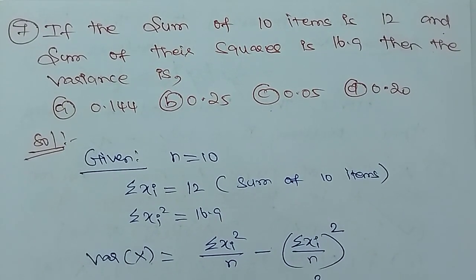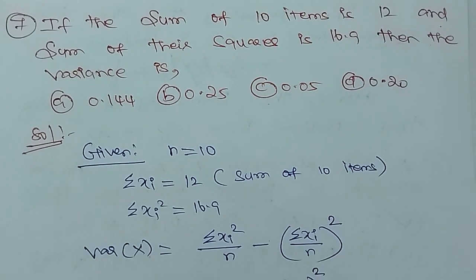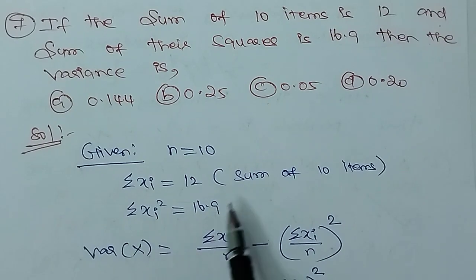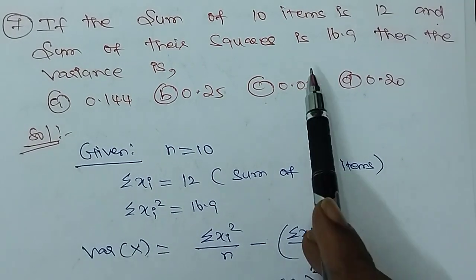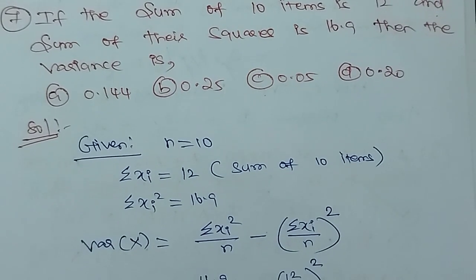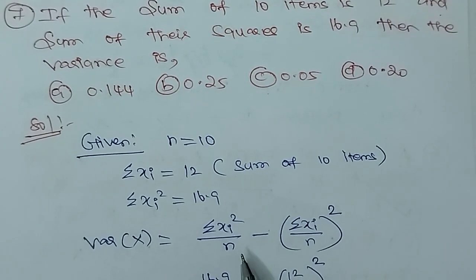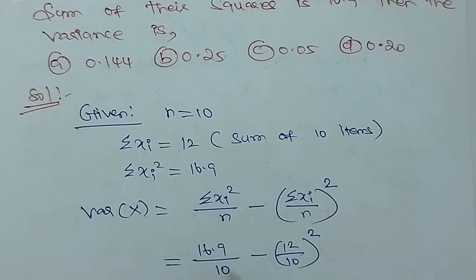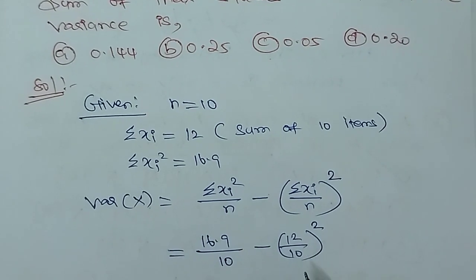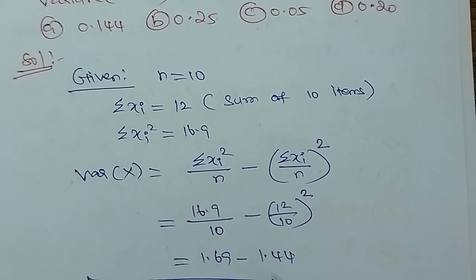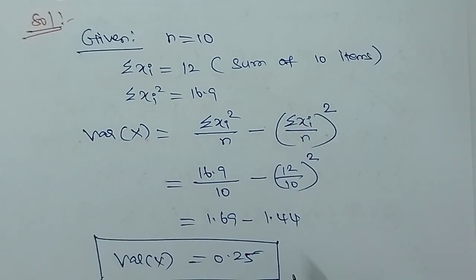Question 7: If the sum of 10 items is 12 and the sum of squares is 16.9, then find the variance. Here n equals 10, Σxi equals 12, and Σxi² equals 16.9. The variance equals Σxi²/n minus (Σxi/n)², which gives 16.9/10 minus (12/10)², equal to 1.69 minus 1.44, giving variance of x equal to 0.25.